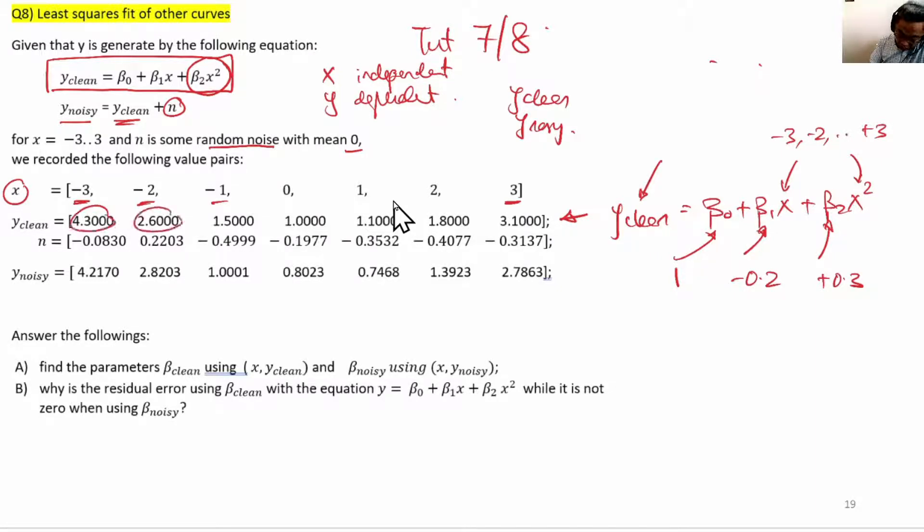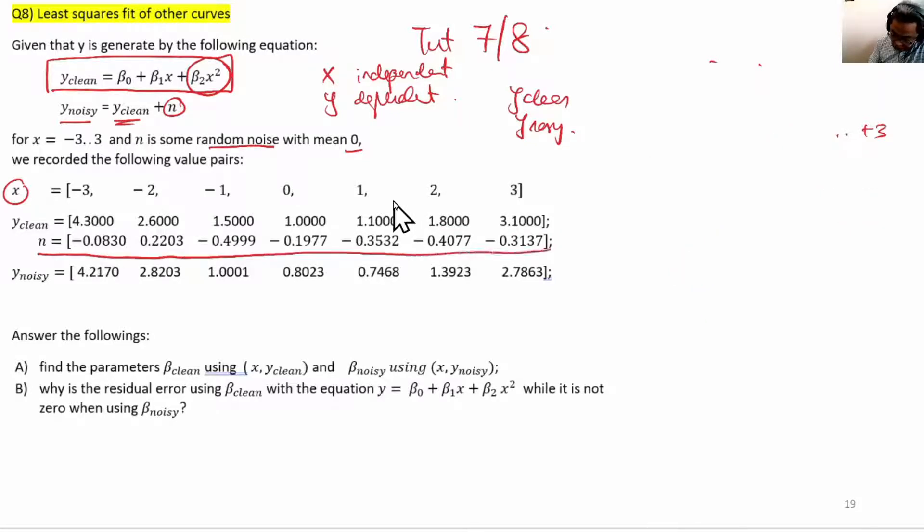You can see how we have evaluated y_clean by simply plugging in β₀, β₁, β₂ into this equation along with the different x's. We generated some noise n, seven of them, and then we computed y_noisy as y_clean plus n.